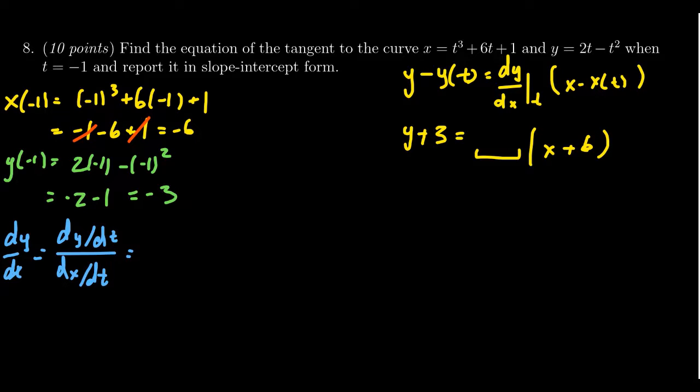So we take the derivative of y with respect to t, we're going to get 2 minus 2t over the derivative of x with respect to t, which is 3t squared plus 6, for which we could try to simplify this.